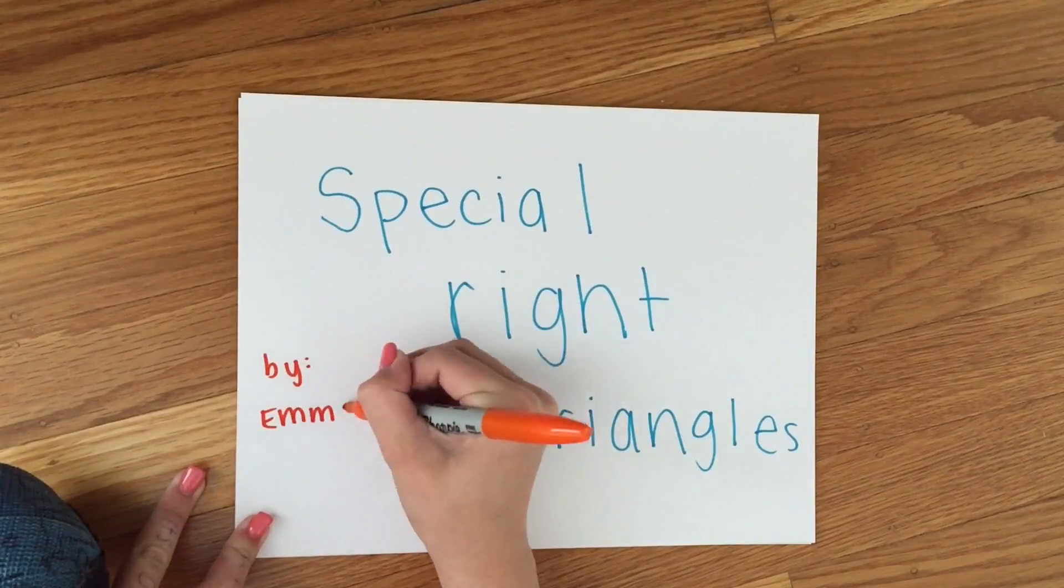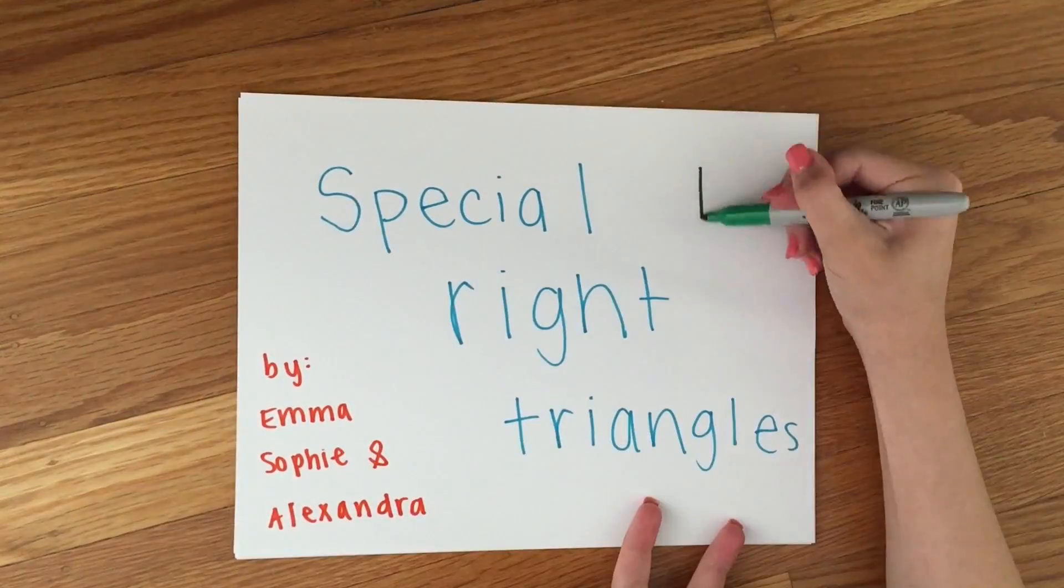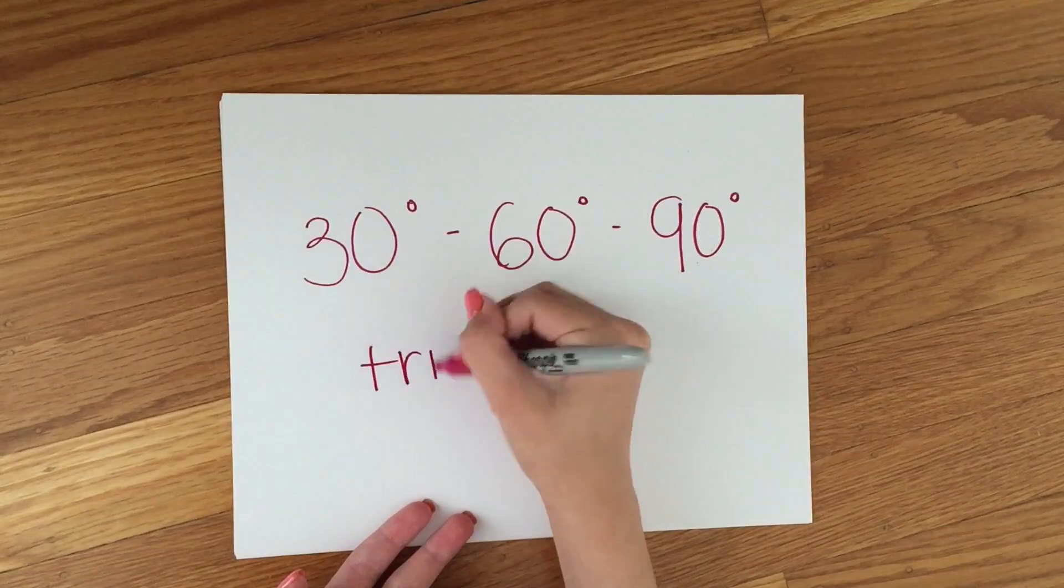Today we're going to be talking about special right triangles. First we have 30-60-90 triangles.